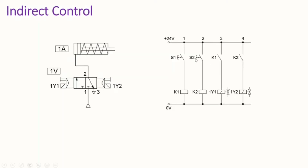When the piston reaches the fully advanced position, we turn on switch S2. From there K2 is energized, K2 closes, and we have solenoid 1Y2 energized. That electrical actuation returns the valve back to its initial position, the air is exhausted, and the piston inside the cylinder retracts. That is how indirect control works.